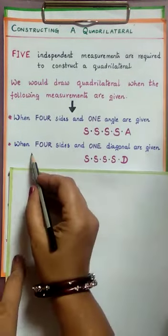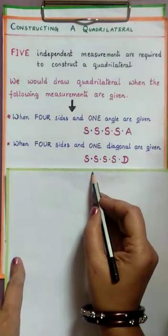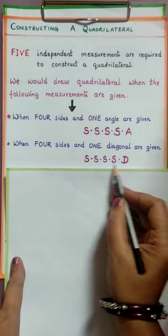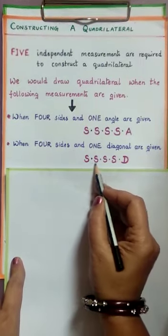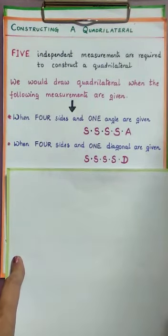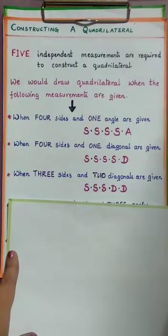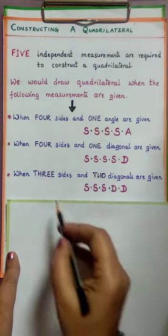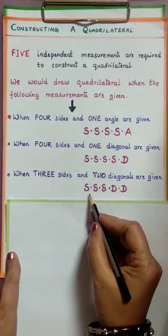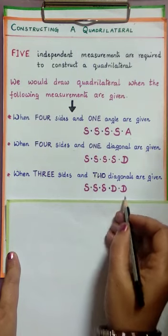The second case: when 4 sides and 1 diagonal are given — D stands for diagonal — giving S, S, S, S, D. The third case: when 3 sides and 2 diagonals are given — S, S, S, D, D.